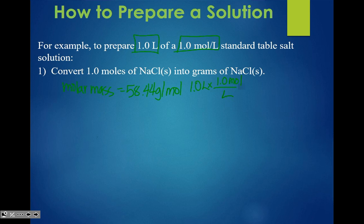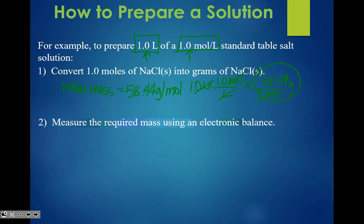That gives you the amount needed to make one liter of 1.0 moles per liter sodium chloride solution. Step two: measure the required mass using an electronic balance. Step three: dissolve the NaCl in about 500 milliliters of water — that's half of the resulting solution volume. So if I want to make one liter, I dissolve it in half first.